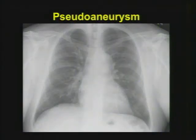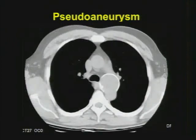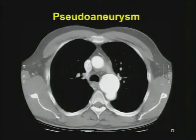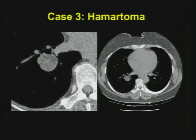Here's a patient: notice that in the AP window there's an extra curved calcific density just below the knob of the aortic arch — a calcified pseudoaneurysm. On CT you can see a nice peripherally calcified lesion with central enhancement after contrast. These are most often now treated by covered stents outside of the inflammatory mycotic setting, so in trauma, covered stents are a great way to treat these without the morbidity of open surgical procedure.